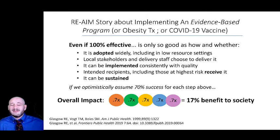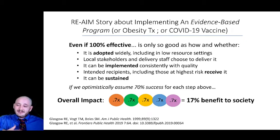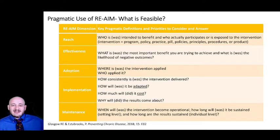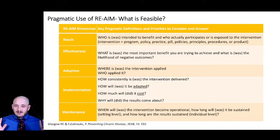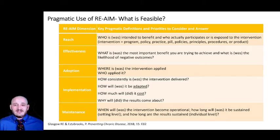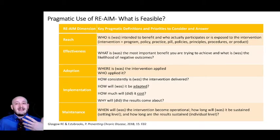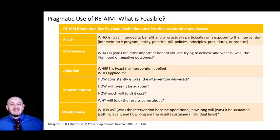That means a lot — even the perfect intervention could be rendered ineffective if implementation is not considered. So let's talk about how RE-AIM addresses this. REACH emphasizes who is intended to benefit from your intervention and who actually participates in it, considering all those that are eligible versus who you actually reach. Using a pill example, your REACH would be those who have the disease or outcome that pill would treat.